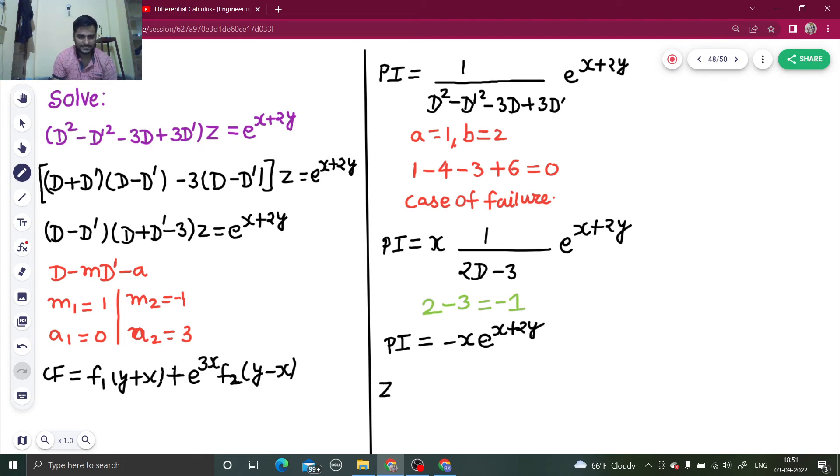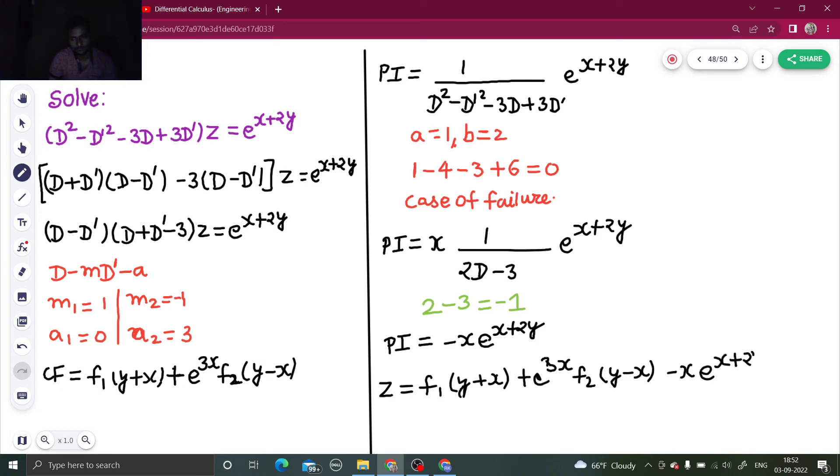So my z is cf plus pi. E power 3x f2 y minus x. That's it.